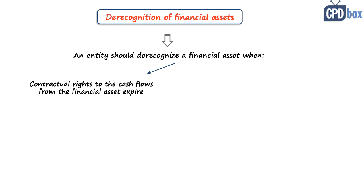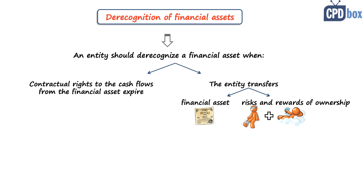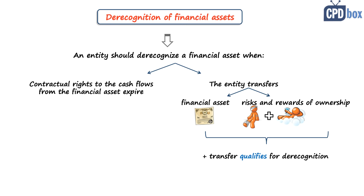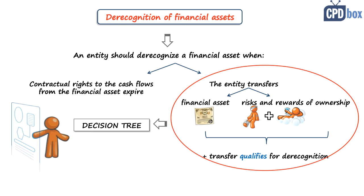Alternatively, de-recognition applies when the entity transfers the financial asset — or substantially all the risks and rewards of ownership — to another party, and the transfer qualifies for de-recognition. IFRS 9 contains a decision tree to help assess whether a transfer qualifies for de-recognition, applying the substance over form principle to decide whether the financial asset shall be de-recognized regardless of the legal form of the transaction.